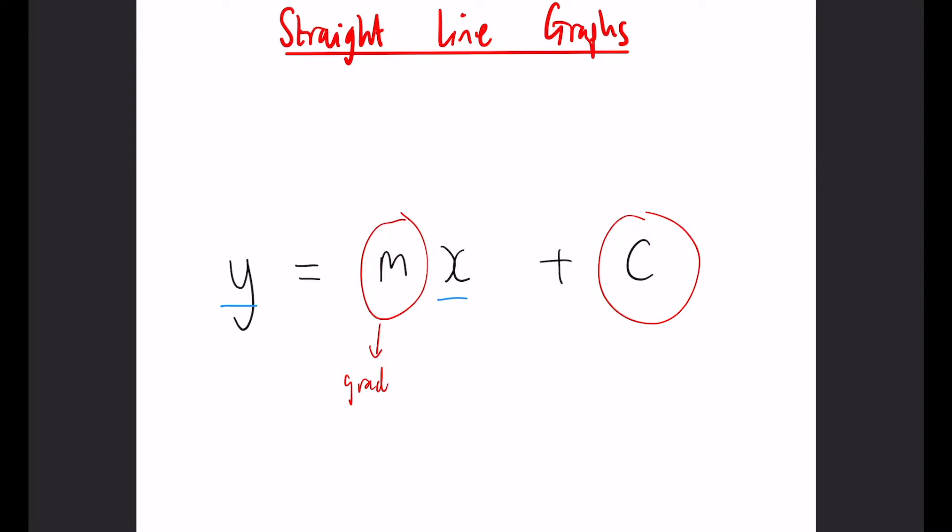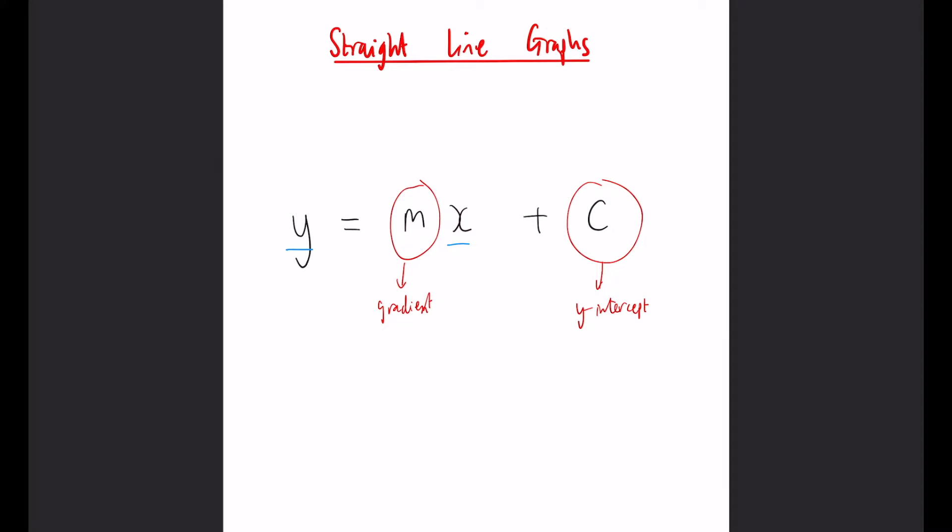The m describes something called the gradient of the line, and the c represents the y-intercept. That just means the point at which the line itself crosses the y-axis. We'll talk about that in an example on the next page.